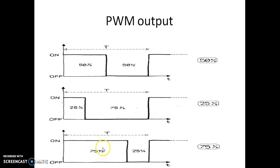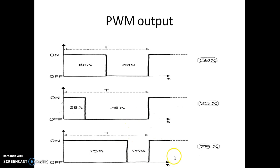If you want 75 percent of logic high, that is 0.75 times VDD, we are going to get a PWM output of 75 percent duty cycle. For 75 percent duty cycle, on time is more and off time is less. For 25 percent duty cycle, on time is less and off time is more. The analog output will be a PWM waveform having different duty cycles.